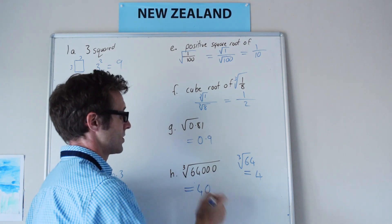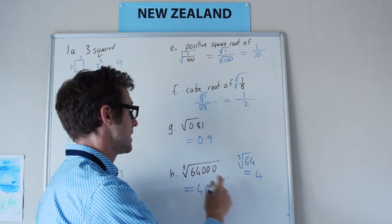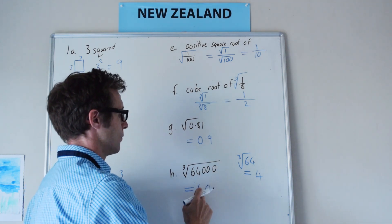And then we've got those 3 zeros, it's going to be 40. 40 times 40 times 40, the 3 zeros will get us that, and the 4 times 4 times 4 will get us 64, so 64,000.